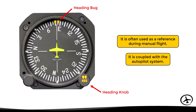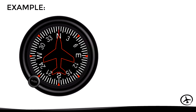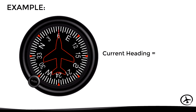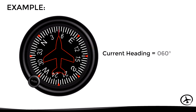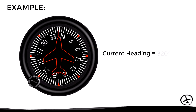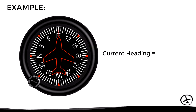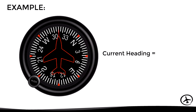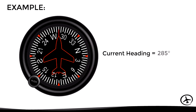Let's see how to read the heading indicator properly. When the line representing the current heading is on the north marking, the current heading is 000 degrees. If the aircraft turns right to show a new indication, the heading would be 060. Turning left gives a heading of 320. In another situation the heading would be 090, and in yet another, 285. The heading indicator is quite intuitive and easy to read.